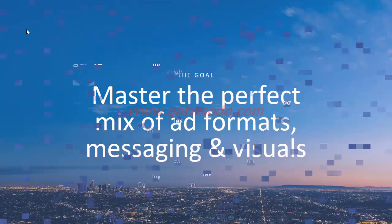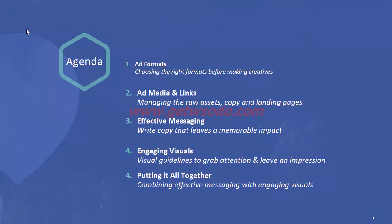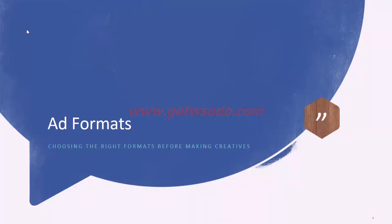The agenda covers a few key points. We'll start with ad formats — choosing the right format before making creatives. Then we'll go to ad media and links, managing the raw assets, copy, and landing pages. Then messaging — how to write copy that leaves a memorable impact. Then engaging visuals — visual guidelines to grab attention. And finally, putting it all together — combining messaging and visuals to create a great advertisement.